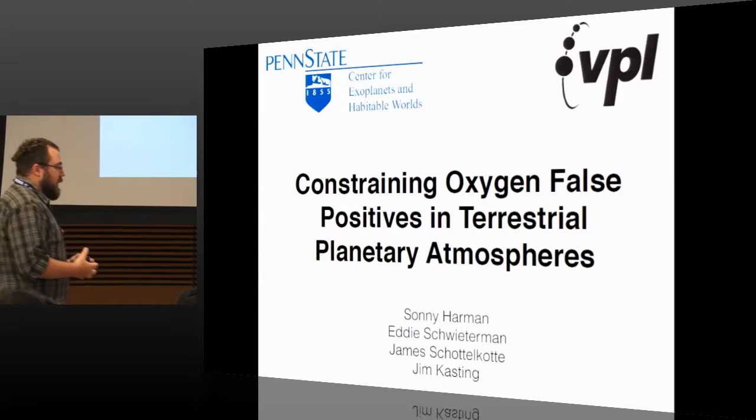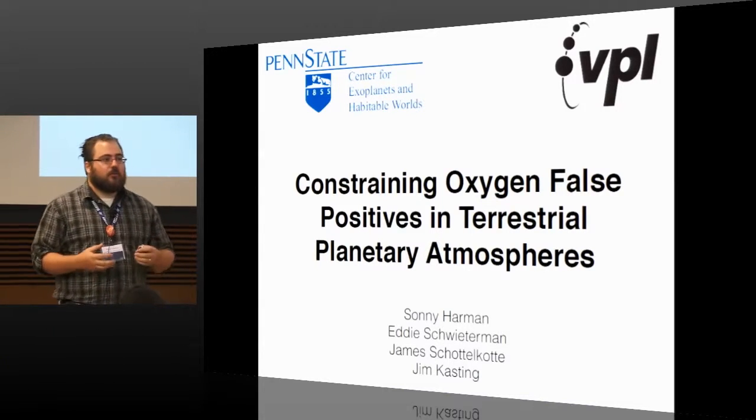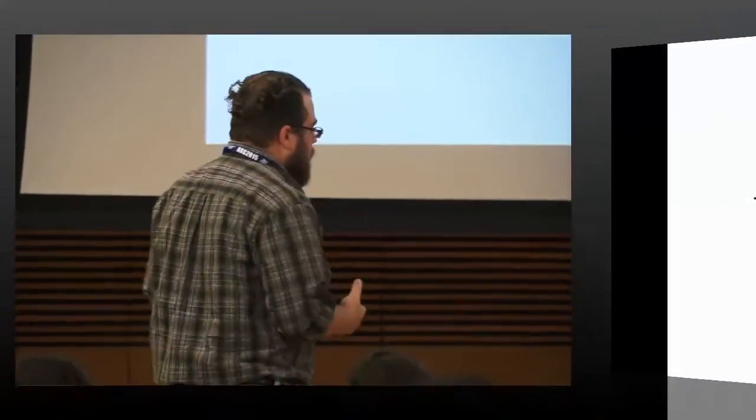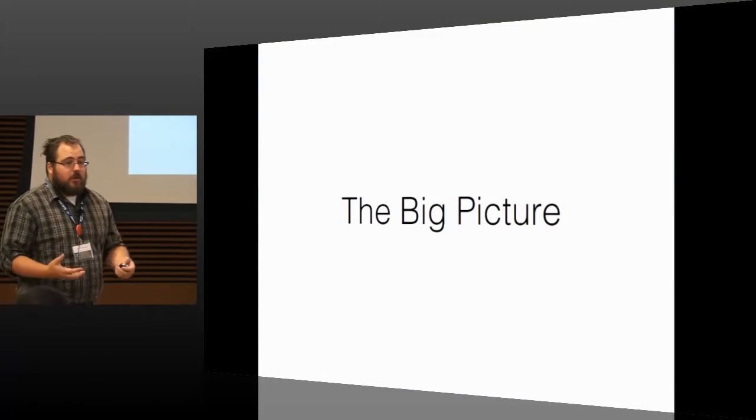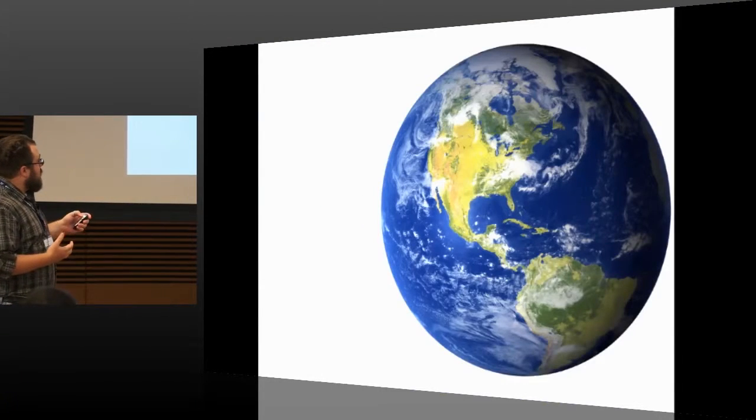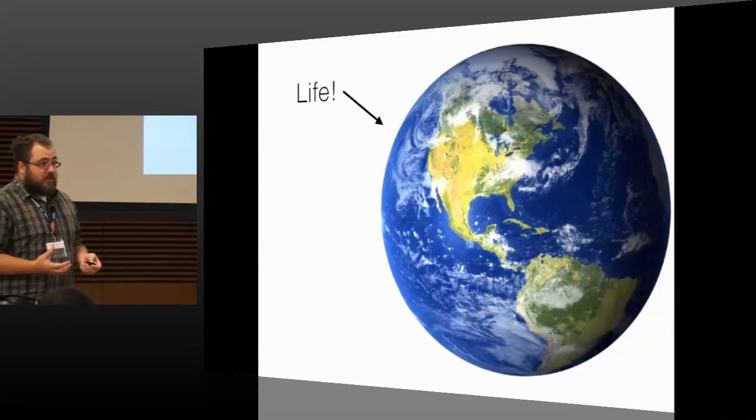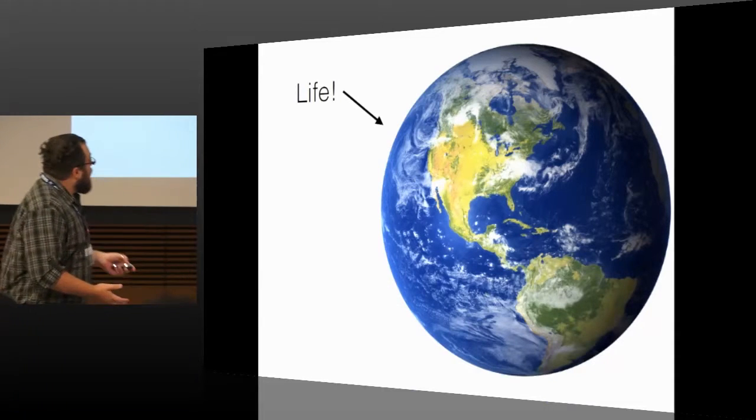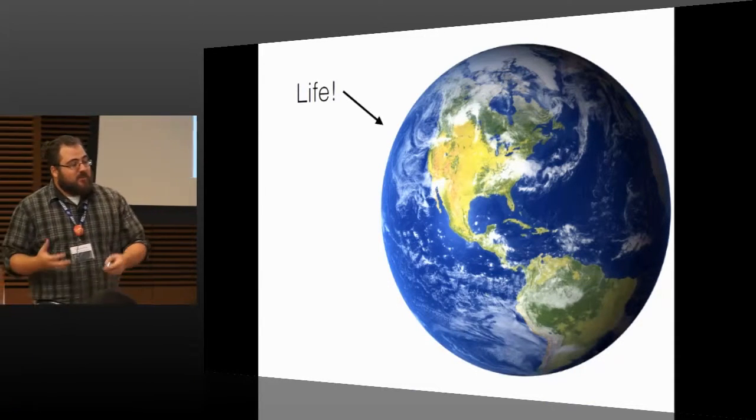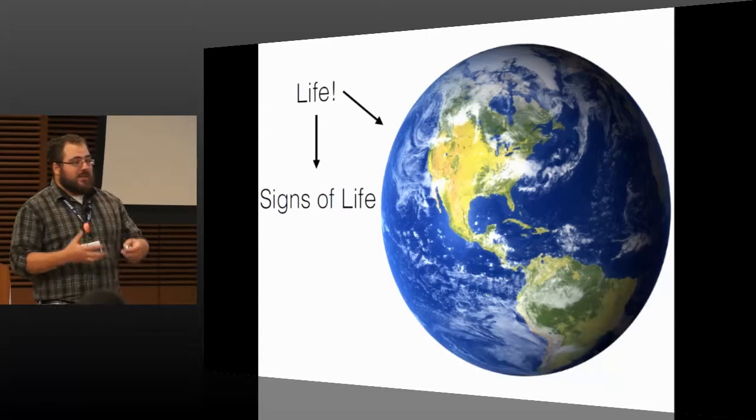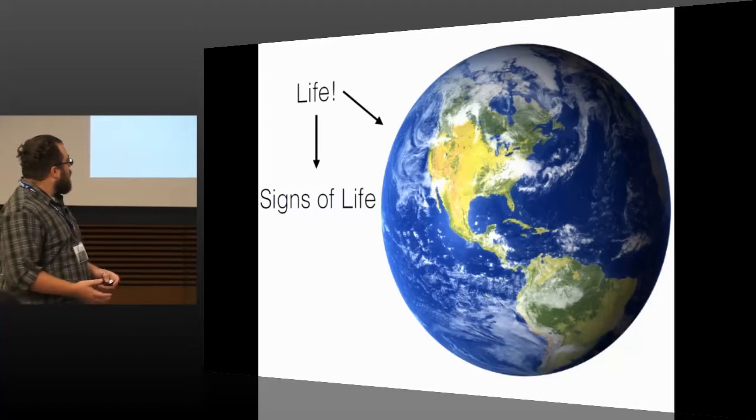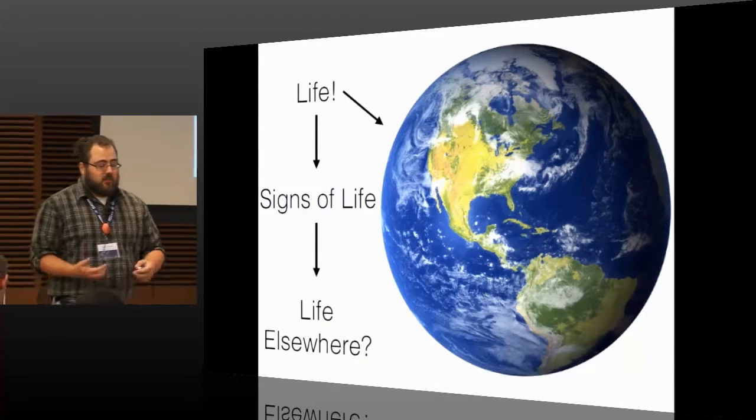What I want to talk to you today about is mostly looking for life around other stars. And one of the best ways that we can do that is by using the Earth as an analog. So the big picture here is that we have this big blue ball, and we know that there's life on it. Conveniently, otherwise there would be no one here to listen to me talk. Now, we can use the Earth as a proxy by saying that life is here, and we can see the signs for life all around us. And what we want to do is we want to take those signs for life and extrapolate them to other places in the universe.